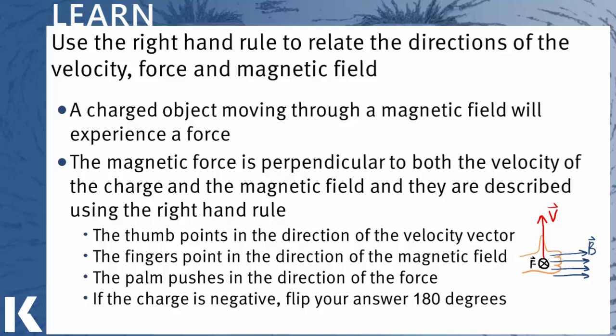Now if the charge was negative, we would flip our final answer. In this case, instead of being into the page, our force would be out of the page. And we would note that with a circle with a dot in the middle, like the arrow was coming out towards us. So this would be our force out of the page.